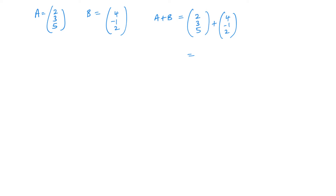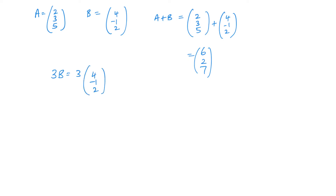So we have 2 plus 4 equals 6, 3 plus negative 1 is 2, and 5 plus 2 is 7 — so that is our vector. If we want to look at increasing the size of a vector, say 3B, that's 3 times the vector B. Multiplying each component by 3, we'd have 12, minus 3 and 6. Very straightforward.